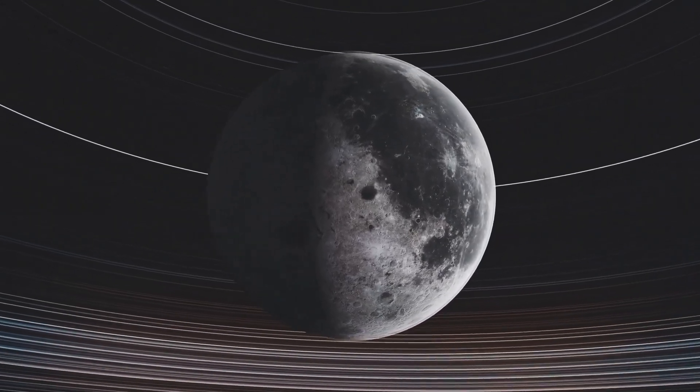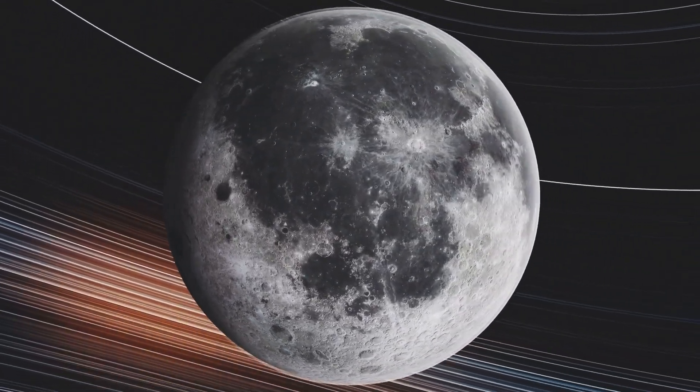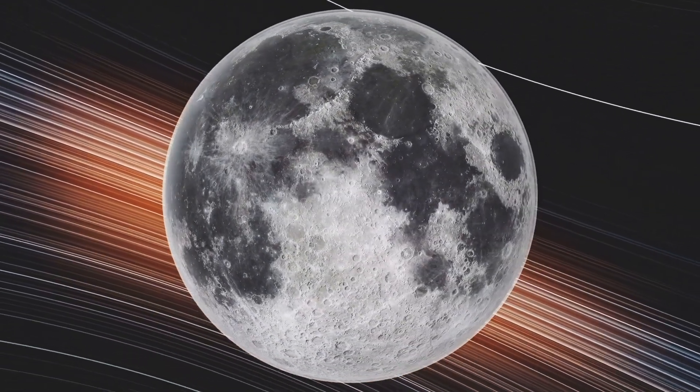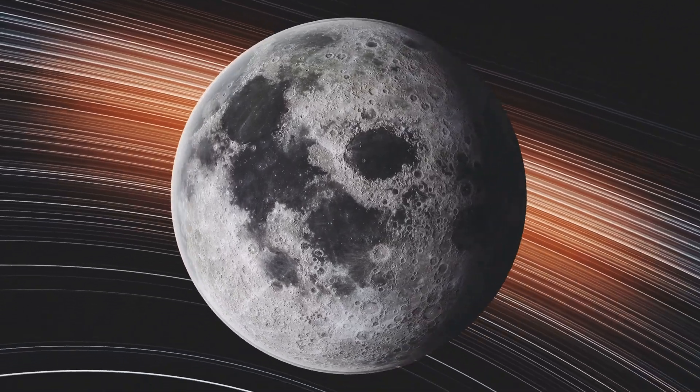There are also moons, asteroids and comets, each playing a role in this cosmic ballet. Moons are like little brothers and sisters to the planets, orbiting them as they journey around the sun, adding to the dynamic nature of our solar system.